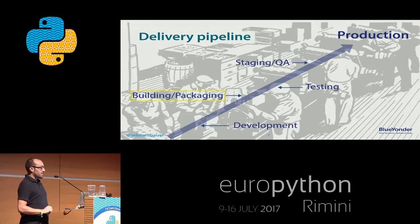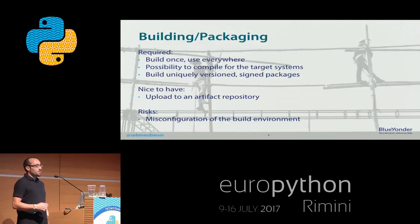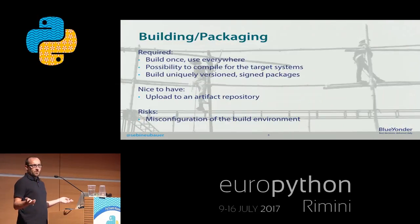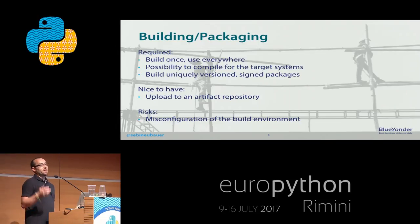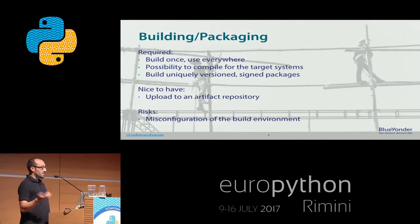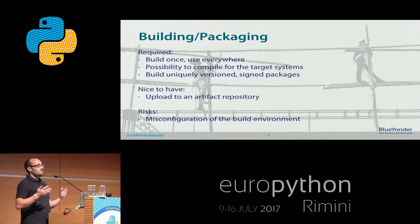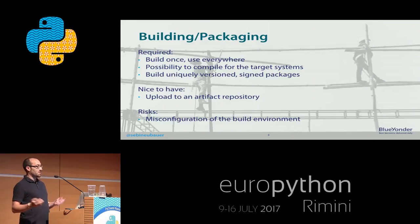The next stage would be building and packaging. You might say Python doesn't have a compiler, but that's not true — there are extensions, Cython extensions, things like this. In general, there will always be some kind of step where we do a compilation of things. We build our artifact.